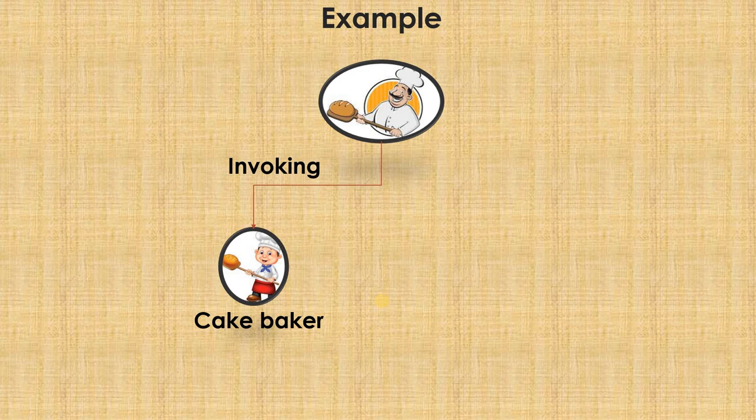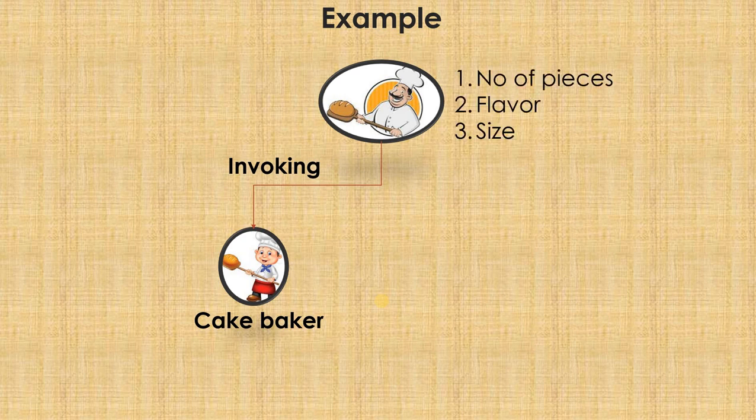I can make a call to that person and say I want cake. The next question would be, how many number of pieces do I require? What is the flavor of the cake that I require? What should be the size or weight of the cake? Everything will be asked by the cake baker. These are the arguments that I will be passing. This set of things that I communicate to the cake baker are called as arguments.